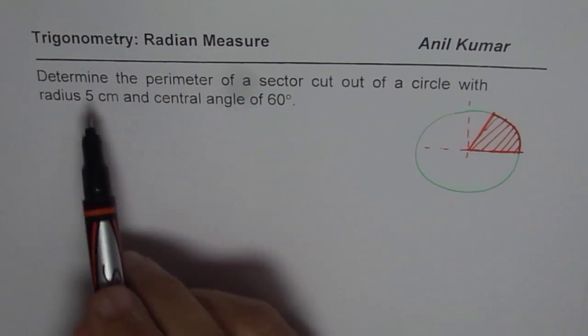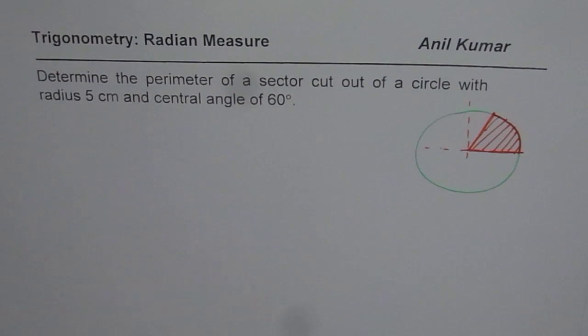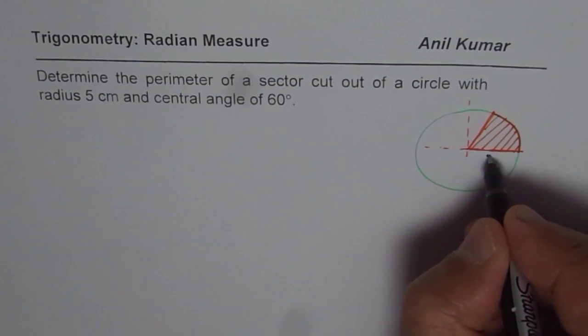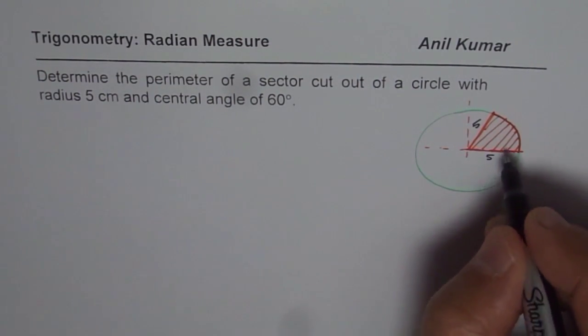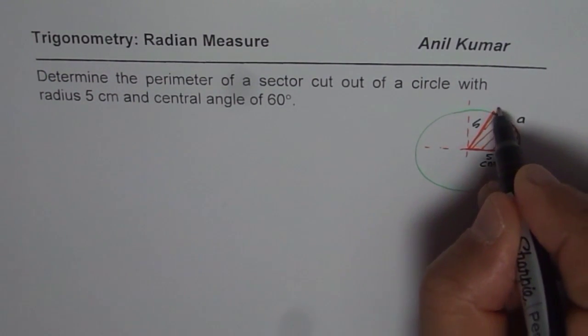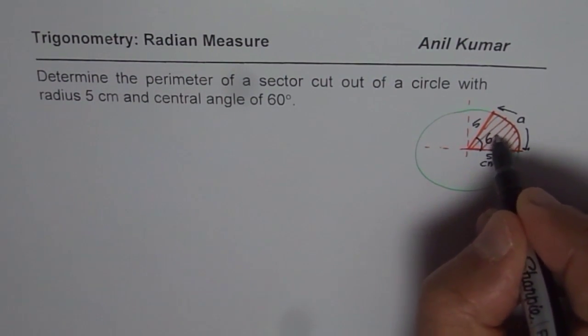The question is, we need to determine the perimeter of the sector cut out. So the perimeter here is the length of these two sides, which is the radius. So these two sides are 5 cm each, let me write 5 cm here. All dimensions are in cm, plus the length of the arc, which is, let me write a for the length of the arc. This angle is given to us as 60 degrees.